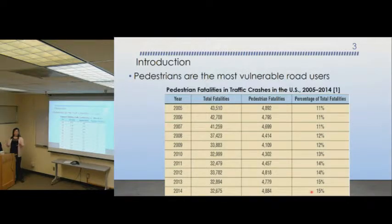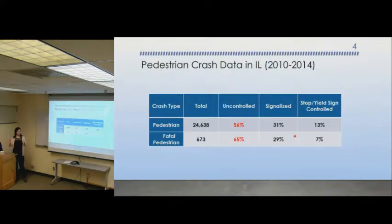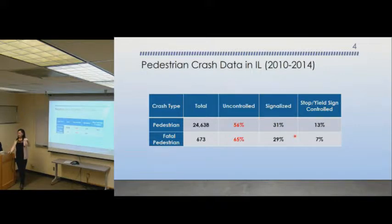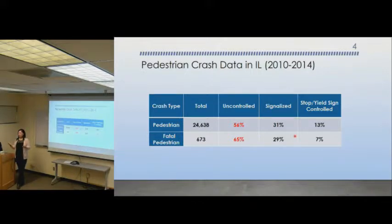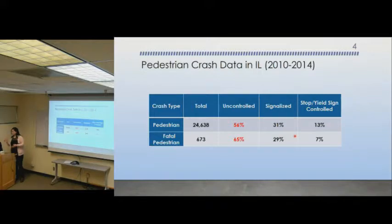The percentage of pedestrian fatality among total traffic fatalities also increases over time — from 13%, 14%, to 15% from 2010 to 2014. That's why many agencies have emphasized pedestrian safety in their safety plans. There are different types of control: signal control, stop or yield sign control — which we call controlled sites — and uncontrolled locations like mid-block crossings with a crosswalk but no traffic light or stop sign.